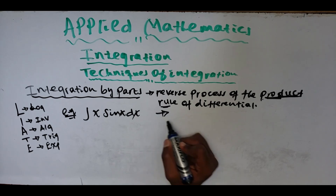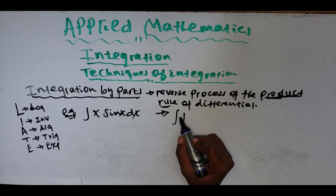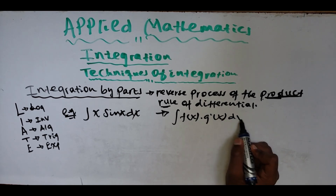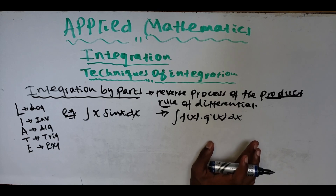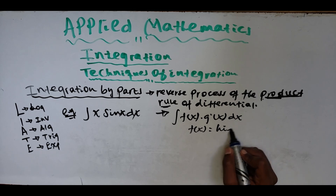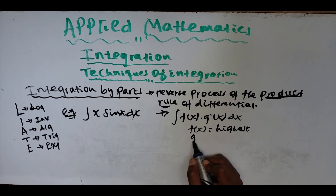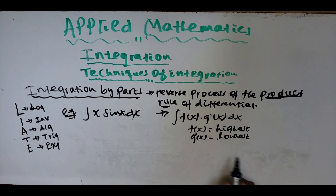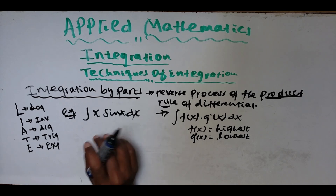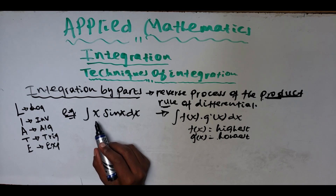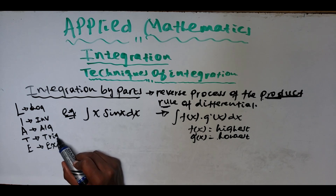Integration by parts is given as: the integral of f(x) times g'(x) dx. We take f(x) from the highest precedence in LIATE and g'(x) from the lowest precedence. In this case we have x and sin(x). Since algebraic is higher precedence than trigonometric in LIATE, we take f(x) = x.